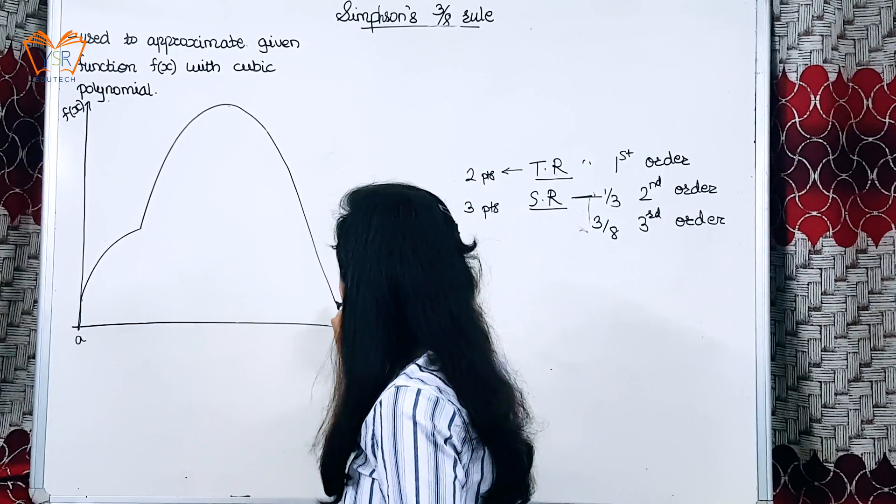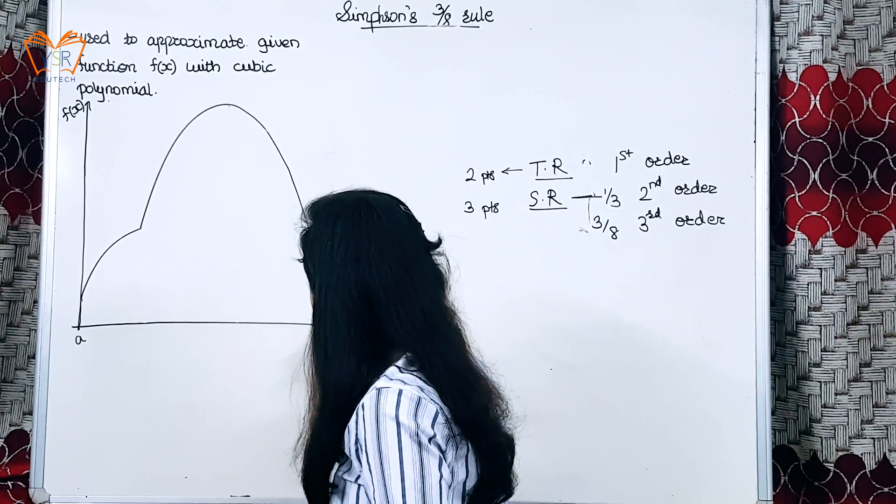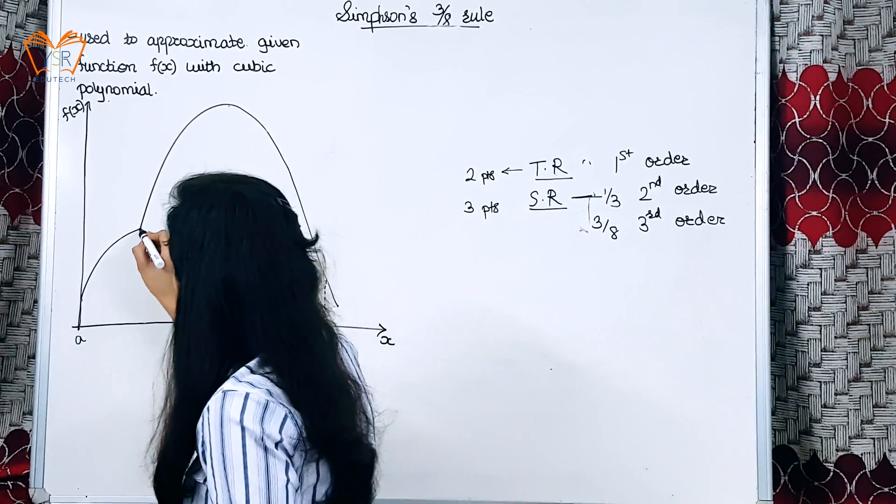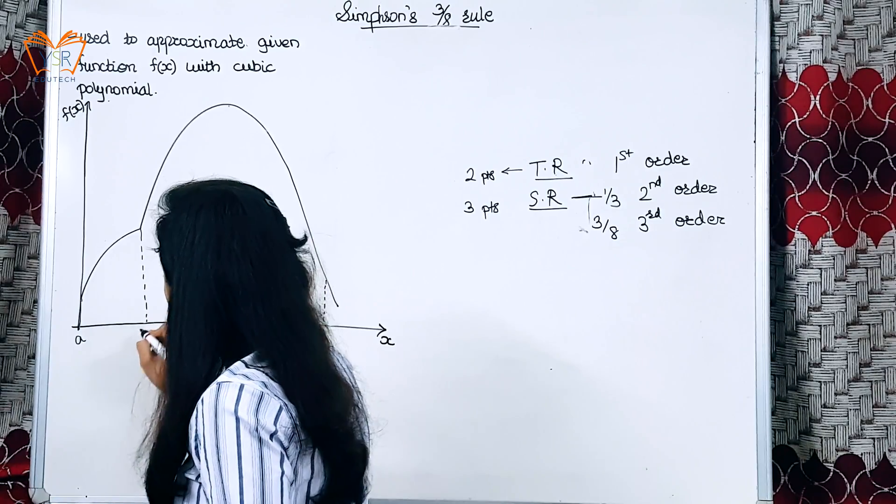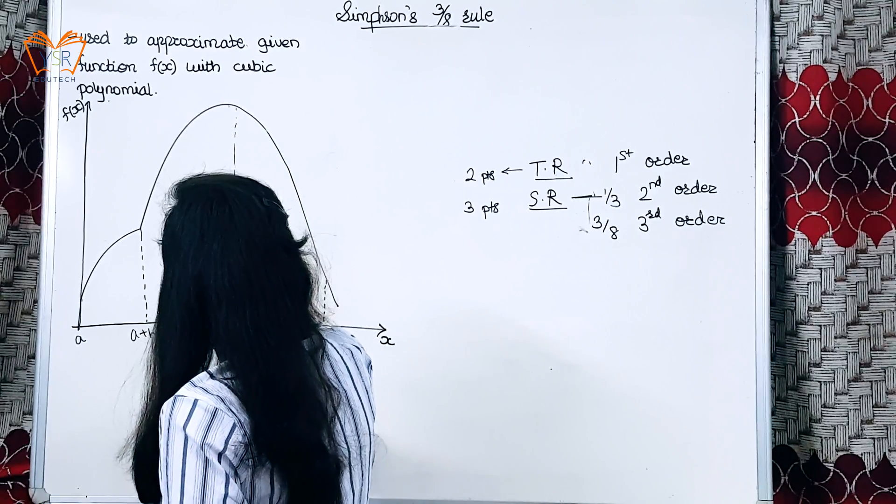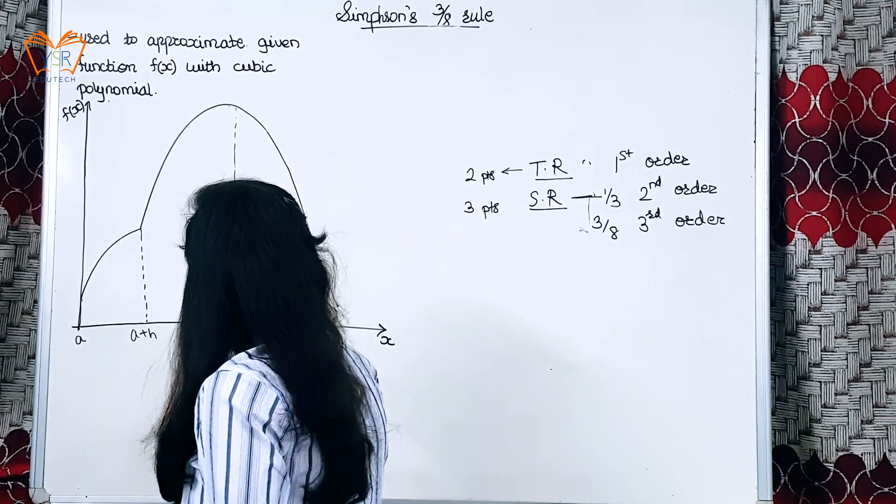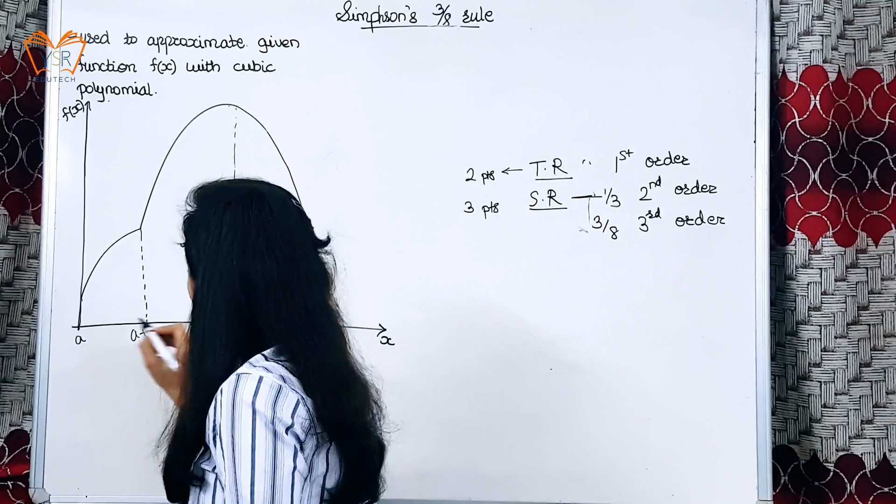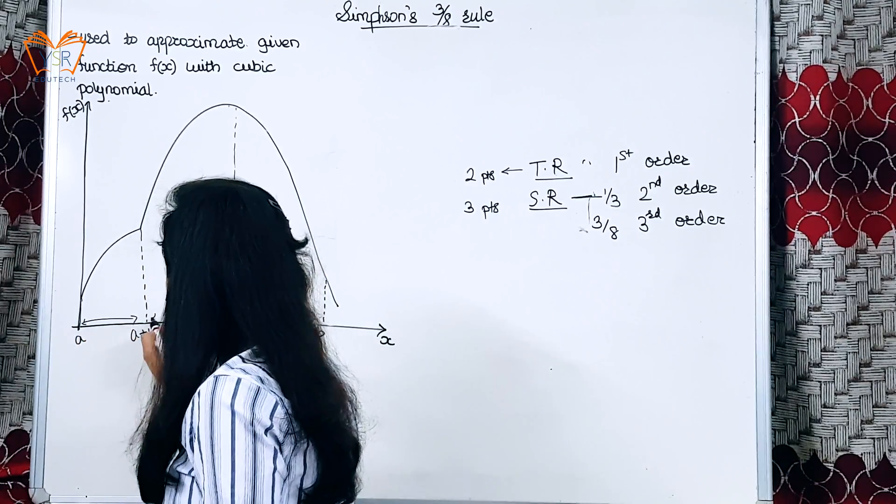This is point A, this is point B, this will be A plus H, and this will be A plus 2H. Make sure that these are equal segments.